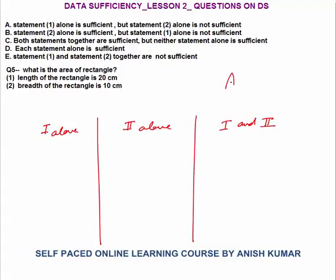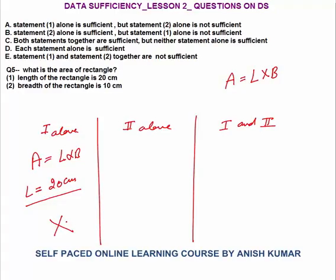Question 5: What is the area of a rectangle? Area = L × B. Statement 1: Length = 20 cm. But we don't have the breadth B, which could be any number, so we won't get a unique answer — this statement is not sufficient. Statement 2: Breadth B = 10 cm. But the length L could be anything (11, 12, 13, 14, etc.), since in a rectangle L is always greater than or equal to B — infinite possibilities. So this statement is also not sufficient.